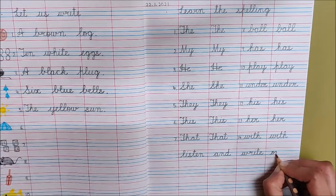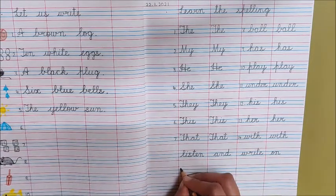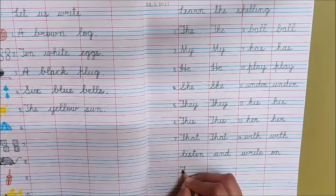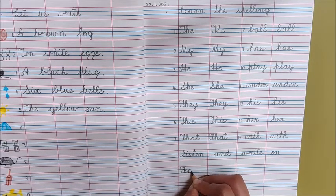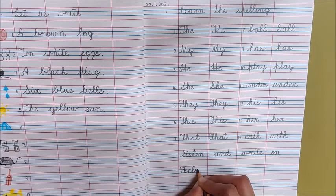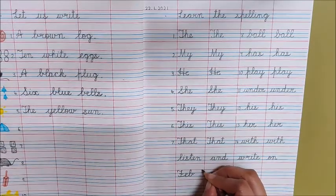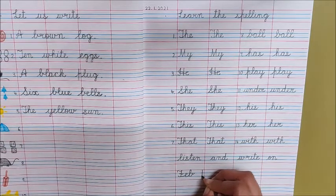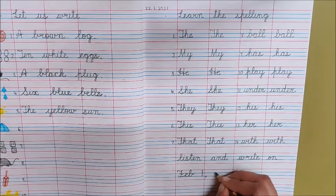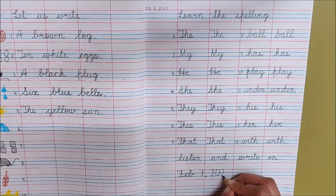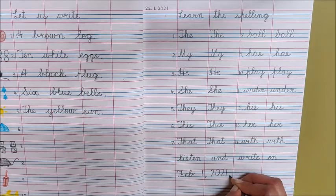On. Write down here February. F-E-B. We are just writing the short form of February 1, 2021. Full stop.